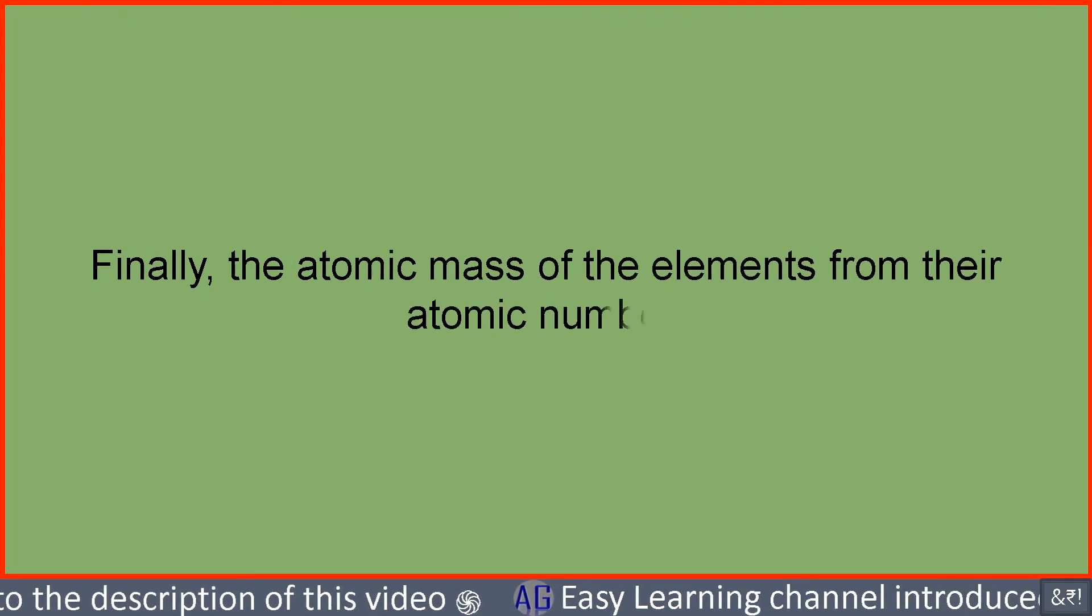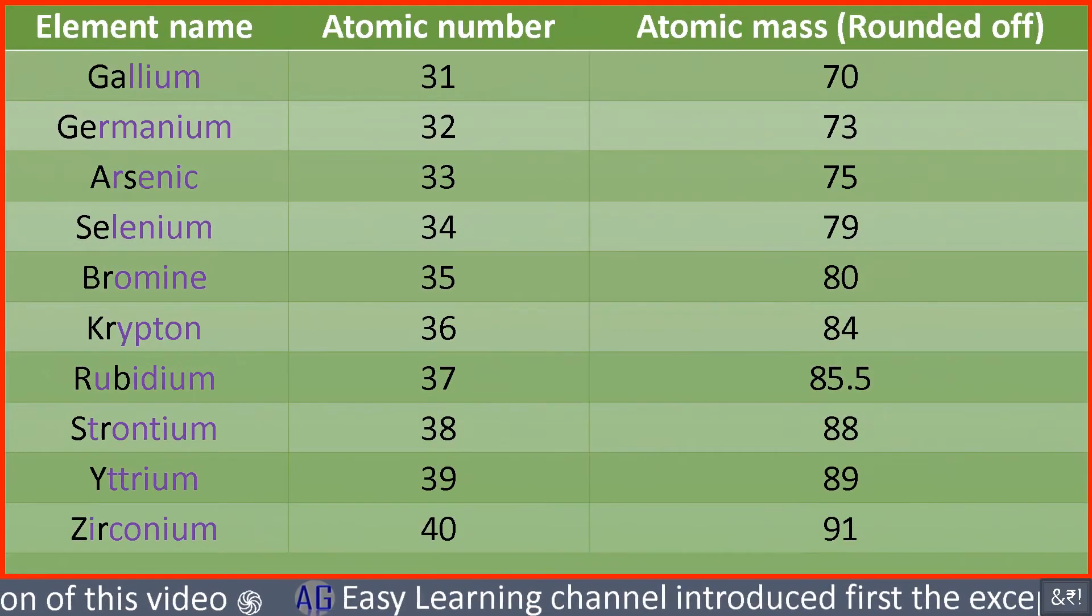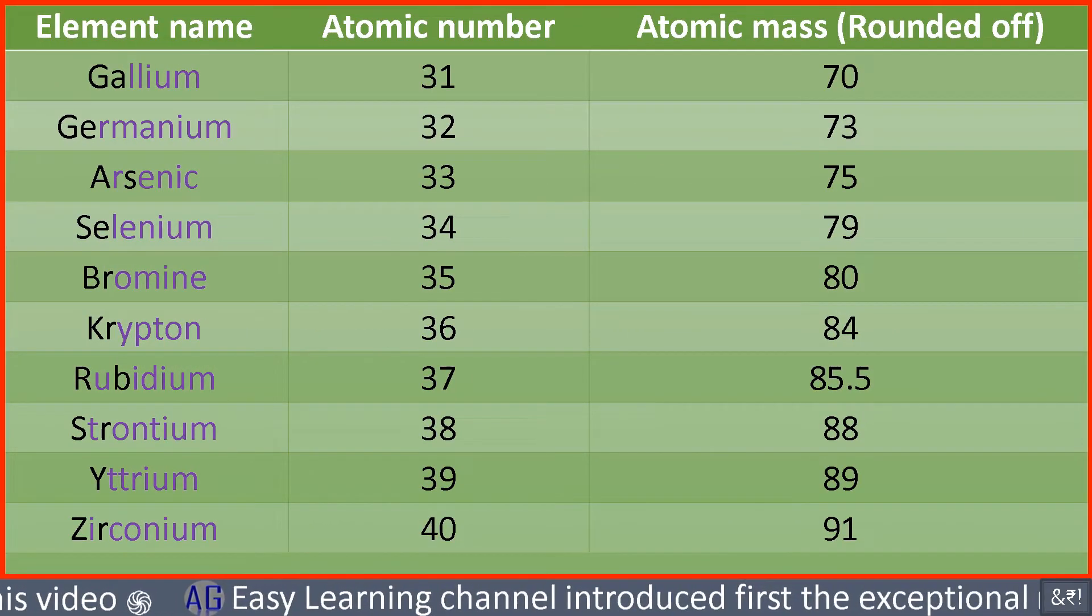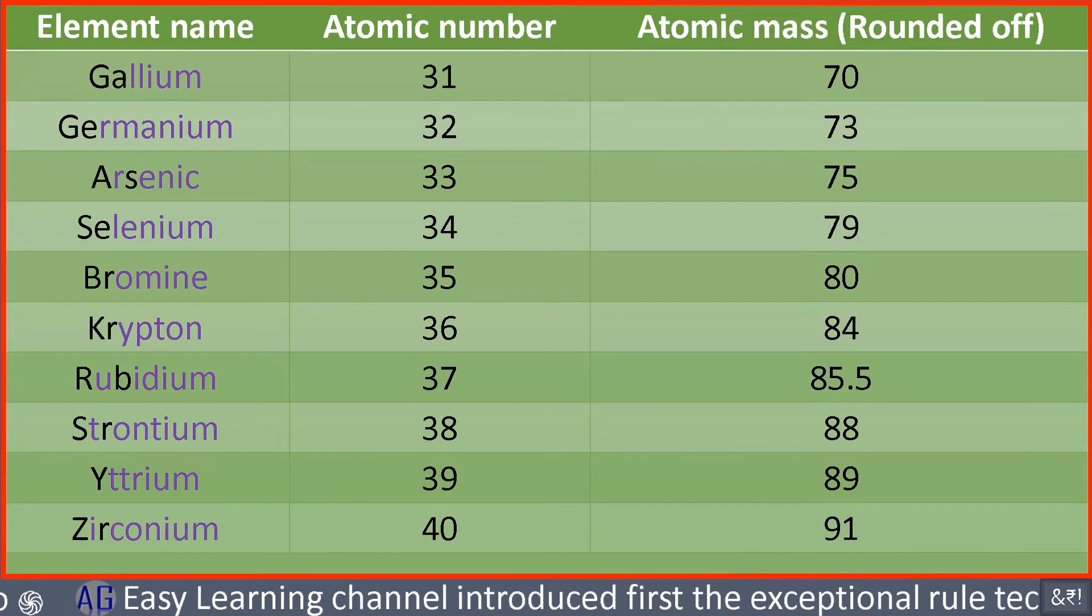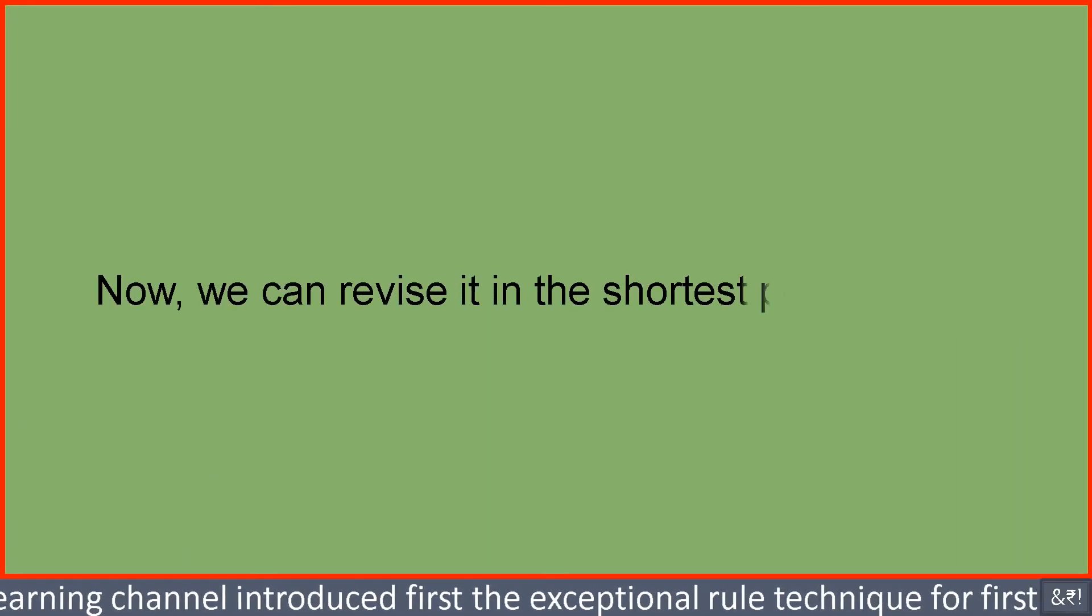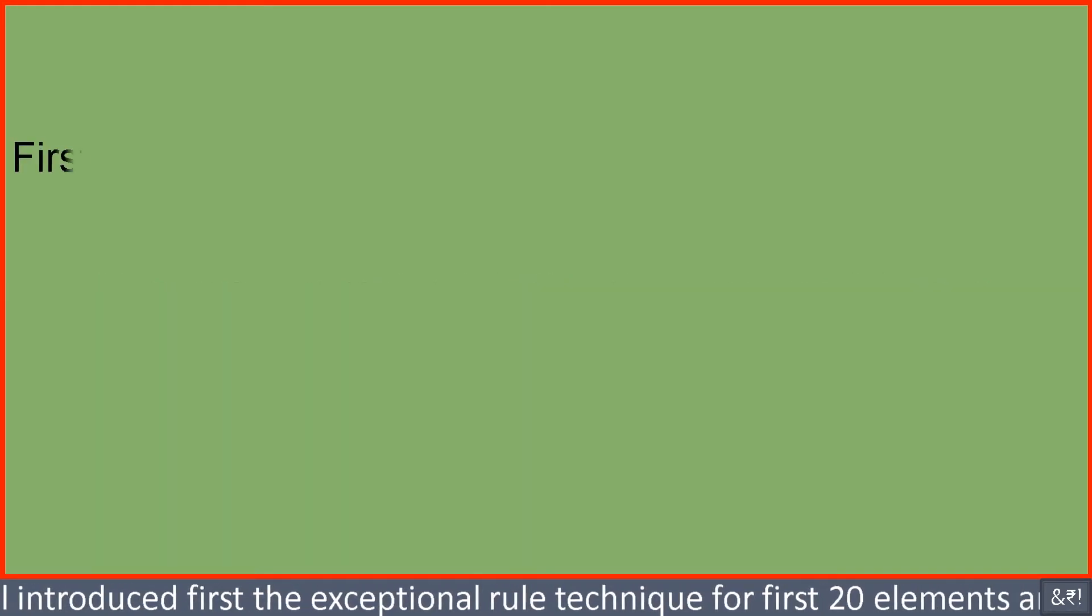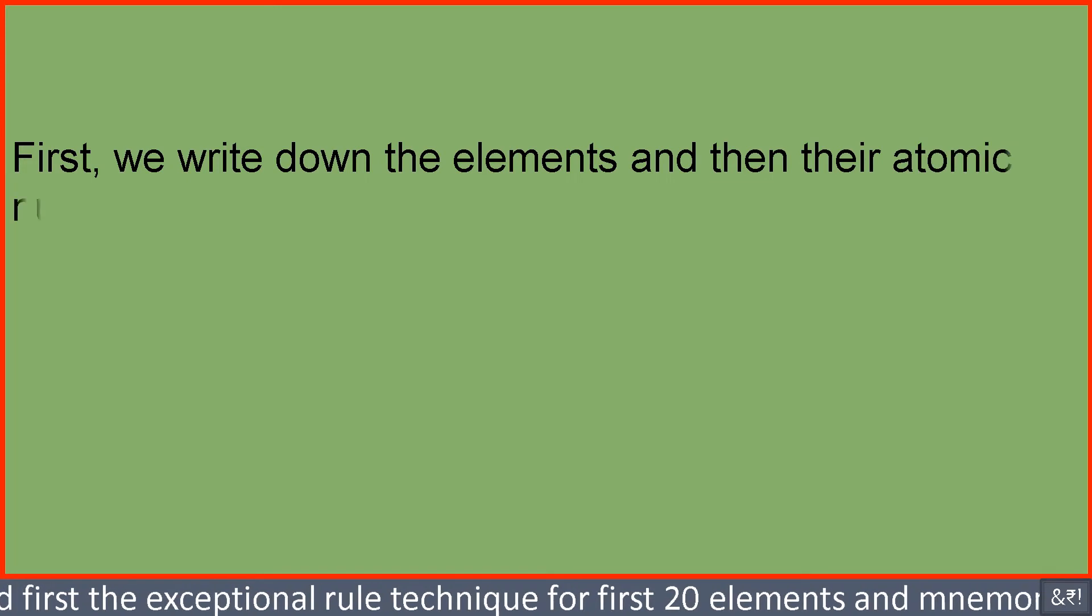Finally, the atomic mass of the elements from their atomic number. Now, we can revise it in the shortest possible way. First, we write down the elements and then their atomic numbers.